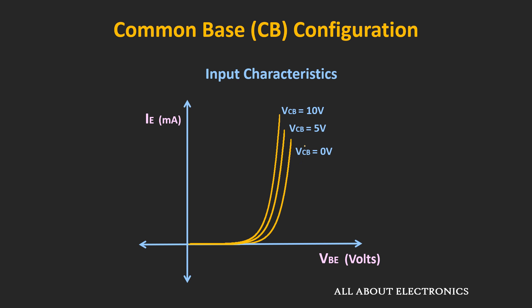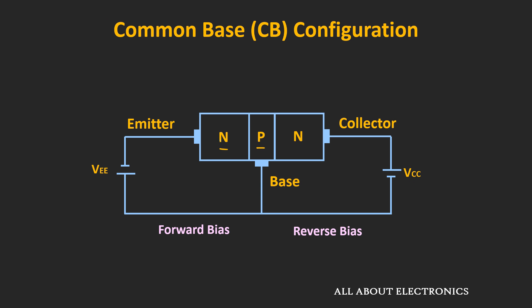From the input characteristics, we can find the input impedance of the device. The input impedance or input resistance is equal to ΔVBE divided by ΔIE. Even a small change in VBE produces a huge change in emitter current, which tells us that in this configuration the input impedance is very low — typically in the range of ohms — because in forward bias the resistance of a PN junction diode is very small.